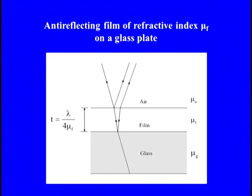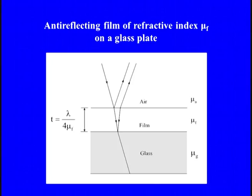One important application of interference of thin films is the coating of non-reflecting films. When these films are coated on surfaces of optical elements like lenses or prisms, the reflectivity of surfaces is very much reduced. Therefore, the loss of light by reflection at various surfaces of a system of lenses or prisms is appreciably reduced. The main idea behind the non-reflecting film is the destructive interference between the waves reflected from the air-film interface and the film-glass interface, by properly adjusting the thickness and refractive index of the film material.